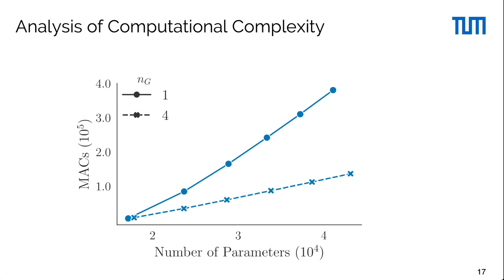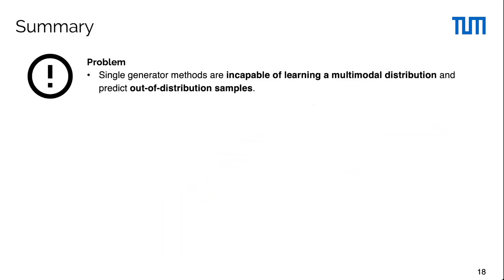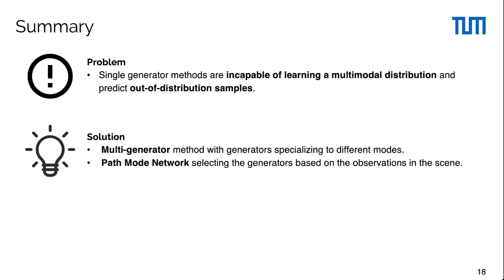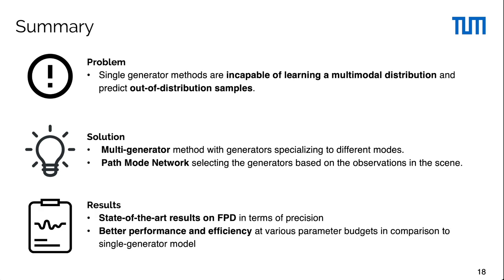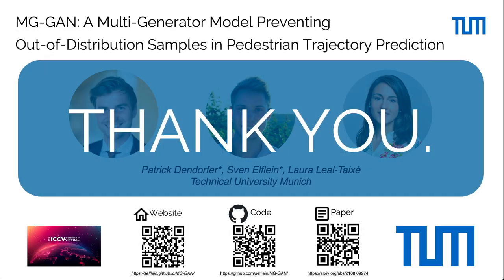In summary, we identified and discussed the limitations of single generator methods to learn multimodal trajectory distributions. As a solution to the aforementioned problem, we propose a novel multi-generator method that consists of a path mode network and multiple generators. Finally, we demonstrate that our method achieves a higher F1 score on the FPD and shows to be computationally more efficient than the baselines. Thank you for watching the summary of our ICCV 2021 paper.